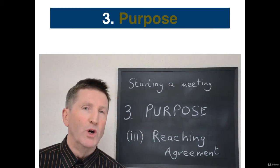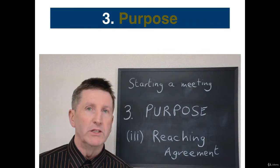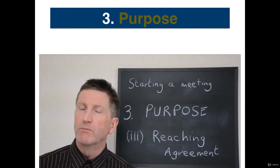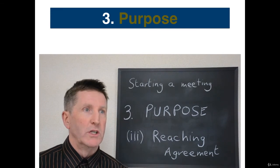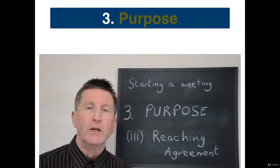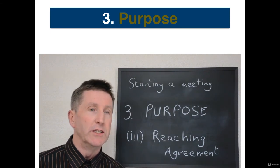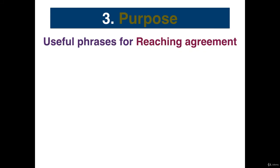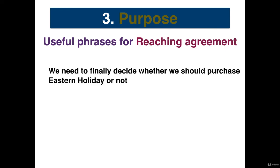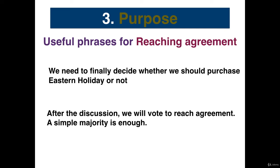Our third purpose is to reach agreement and make a decision. It's really important that the process of making the decision is made clear at the beginning of the meeting, whether it's by voting or by some other method. Often it's very obvious to the facilitator how agreement is reached, but it may not be obvious to the participants. Examples of useful language include: "We need to finally decide whether we should purchase Eastern Holiday to expand our business. After the discussion, we will vote to reach agreement. A simple majority is enough for a decision." There's more information about how to make a decision in Lesson 5.